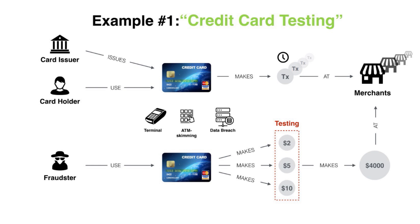Let's say a fraudster gets hold of credit card information via rogue merchant skimming or through a data breach. They want to test the card to ensure it's still usable. They go to nearby merchants and test the card two to three times for increasing dollar amounts, starting with a two to three dollar purchase at a Starbucks, for instance. Once they're certain the card works, they then make a big purchase and move on to the next card. Graph databases can help find these testing patterns among the sea of normal transactions to help stop that big transaction.